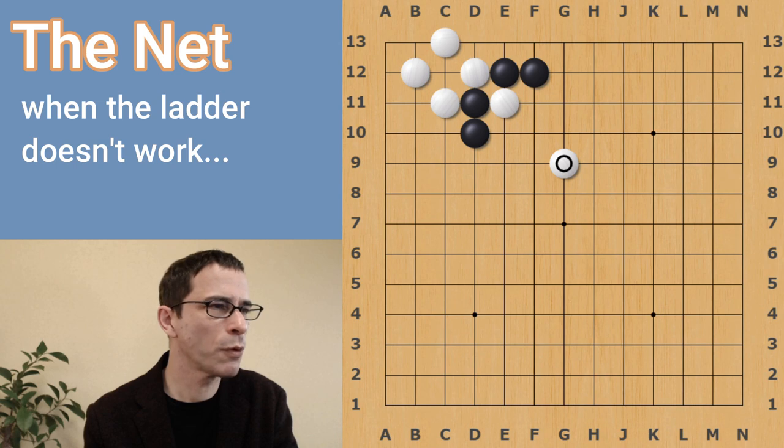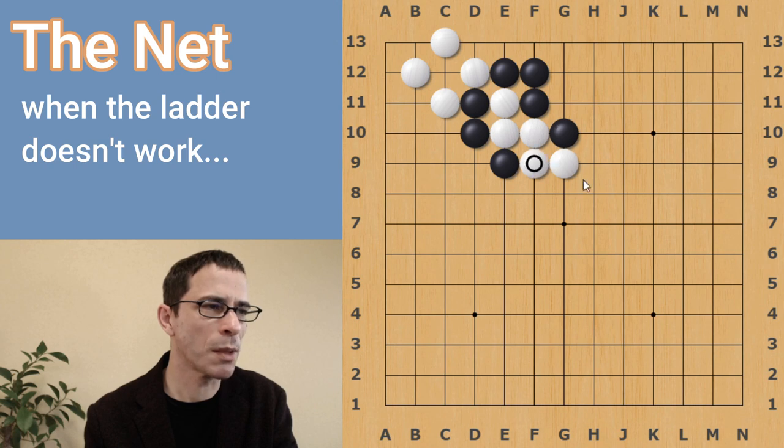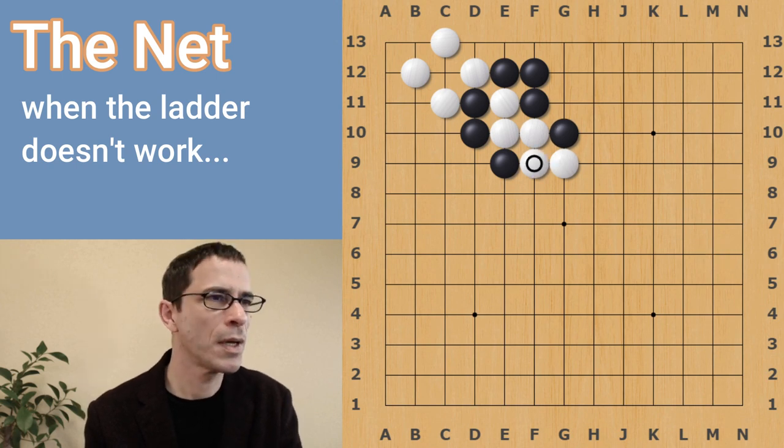It's not good for black to play, for instance, an atari here, because then white would be able to escape and would eventually connect up to this stone in the center. So let's look at another position from a real game.